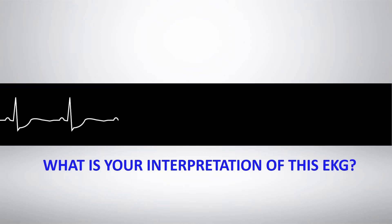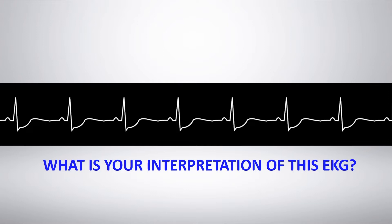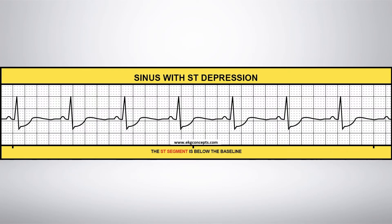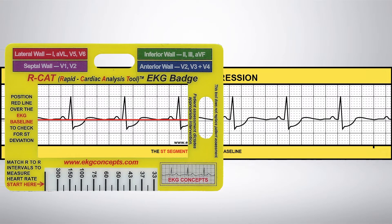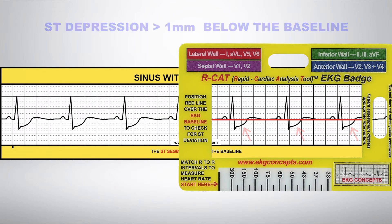What is your interpretation of this EKG? Sinus with ST depression. Let's use the EKG badge to interpret this rhythm. Align the red line of the badge with the baseline and slide it along the rhythm strip looking for ST deviation. Here, you have ST depression greater than 1 mm below the baseline.